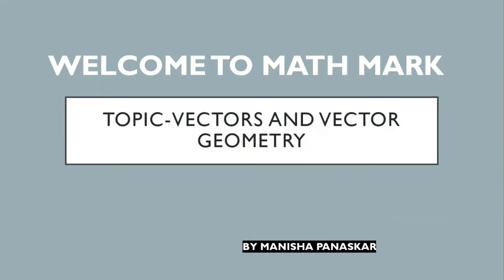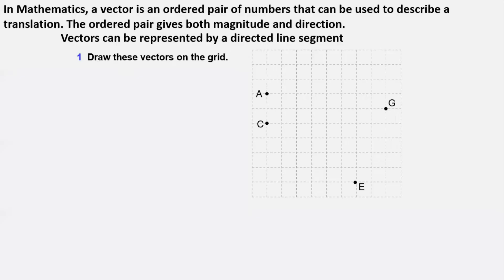So in physics, we have learned about scalars and vectors. Here in mathematics, a vector is an ordered pair of numbers that can be used to describe a translation. The ordered pair gives both magnitude and direction. Vectors can be represented by a directed line segment, where the arrow is important as it shows the direction.